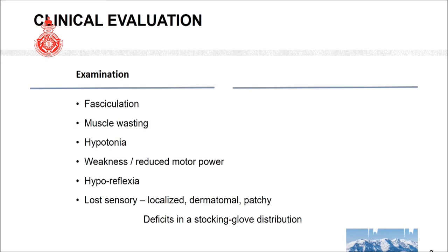In clinical evaluation, the key points found in peripheral nervous system disorders are: fasciculation, muscle wasting, reduced tone, reduced motor power, reduced or diminished reflexes, and loss of sensation which can be localized, dermatomal, patchy, or stocking-and-glove type distribution. If these key features are present, then it is a peripheral nervous system disorder — a lower motor type pathology — that you are dealing with.